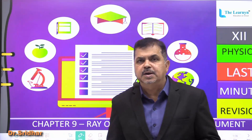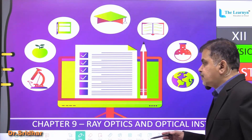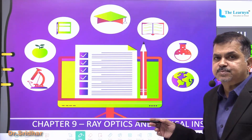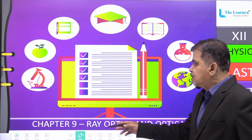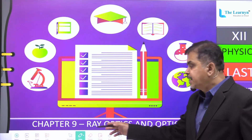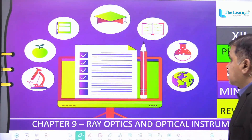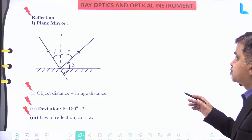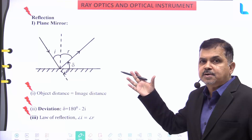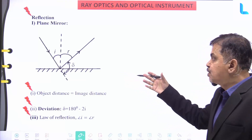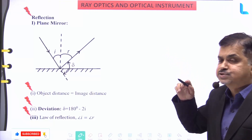Let us do a last-minute revision for Physics Class 12, covering Chapter 9 on Ray Optics and Optical Instruments. We will note some important formulas and concepts related to Ray Optics and Optical Instruments.